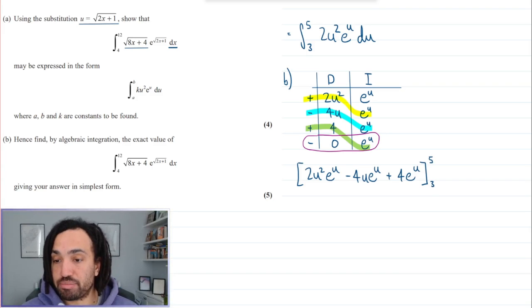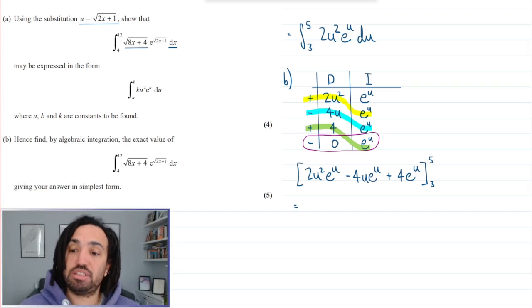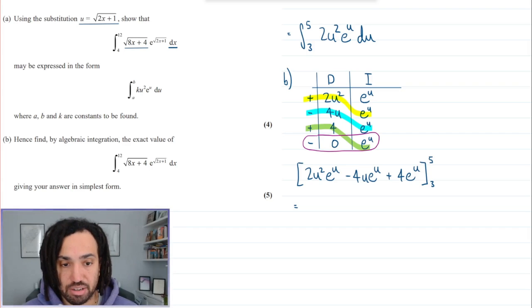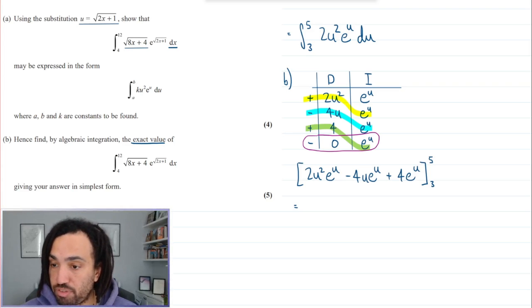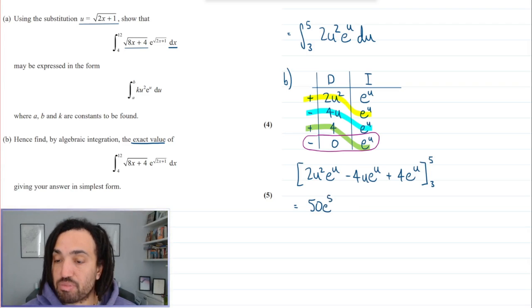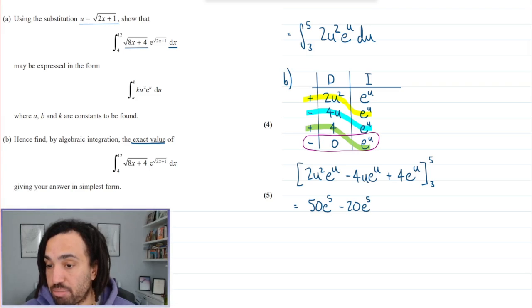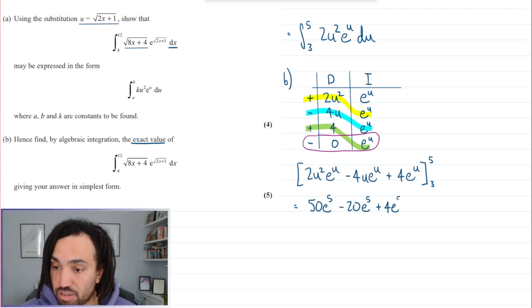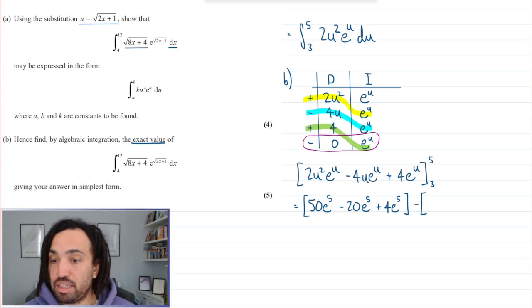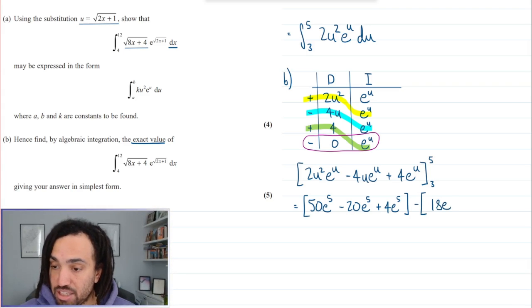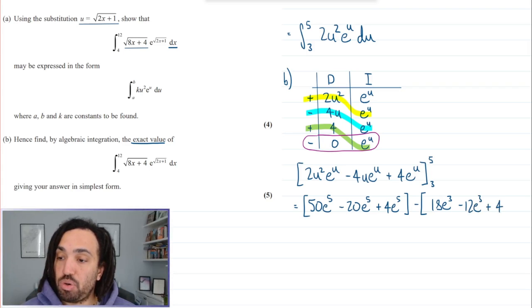So we've got five and we've got three. All we'll have to do now is to sub in. It does say give the exact value, so I'm going to get 5 squared times 2 so that's 50, and that's e to the 5. I'm then going to get minus 20 again e to the 5, and here I'm going to get plus 4 e to the 5. Those are the inputting 5 part. Now let's input 3 in, and that's going to give me 18 e to the 3, minus 12 e to the 3, and then plus 4 e to the 3.